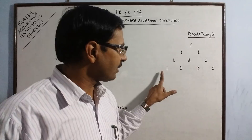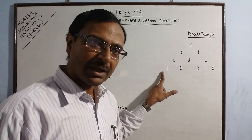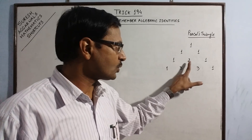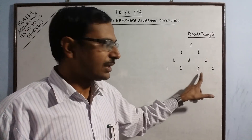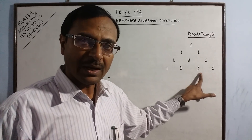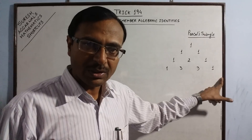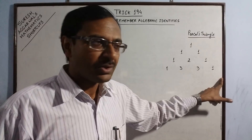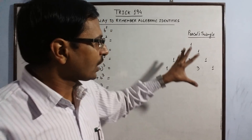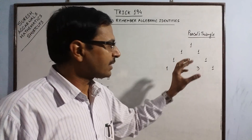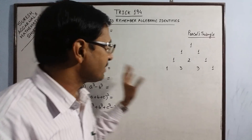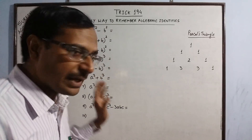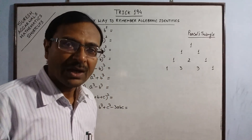So here we have 1 in the beginning, then 1 plus 2 gives 3, then 2 plus 1 again gives 3, ending with 1. This small concept can enable us to remember these algebraic identities very easily.